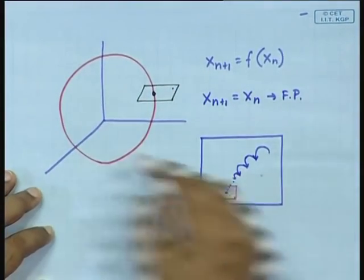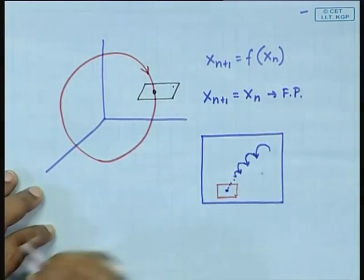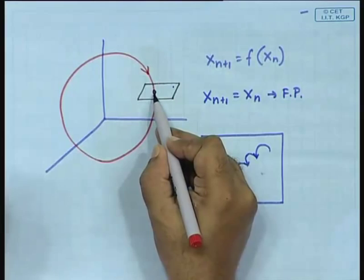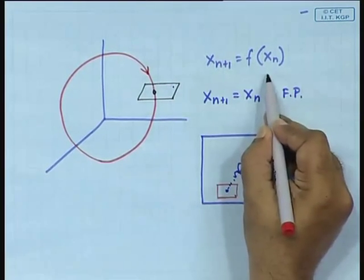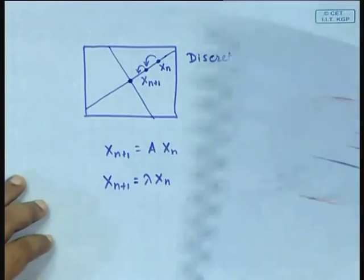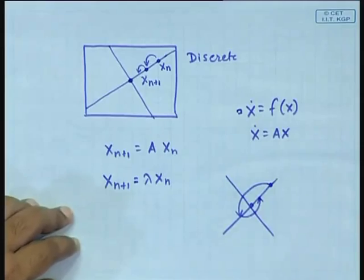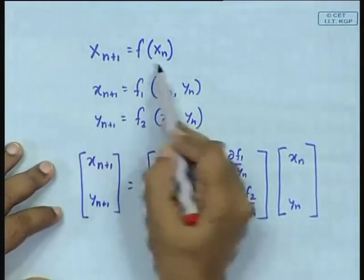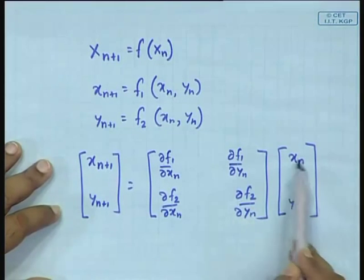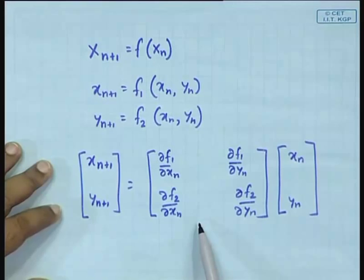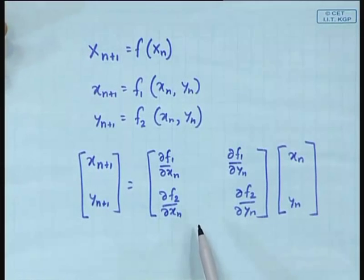Let us take stock. We started with a continuous time orbit, observed it at each Poincaré section piercing, and obtained a map. We then locally linearize around the fixed point by computing the Jacobian matrix, find its eigenvalues, and if the eigenvalues are less than 1 in magnitude, we conclude the orbit is stable.